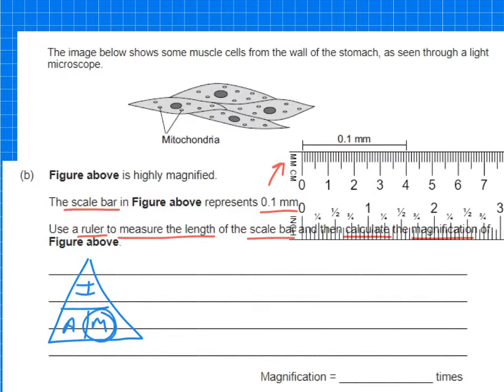I want to find magnification, so it's the image divided by the actual. The image size is 40 millimeters that we've just measured with the ruler, and the actual size is 0.1 millimeters. You take that and place it into your calculator, and you'll get the answer of 400, so it's times 400.